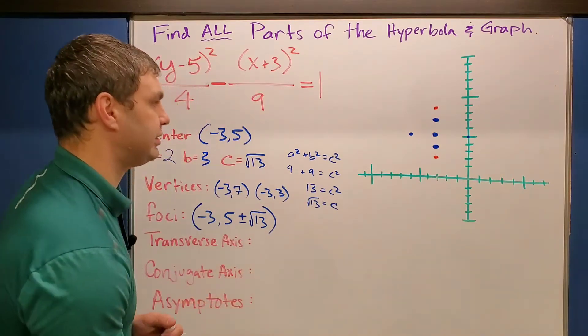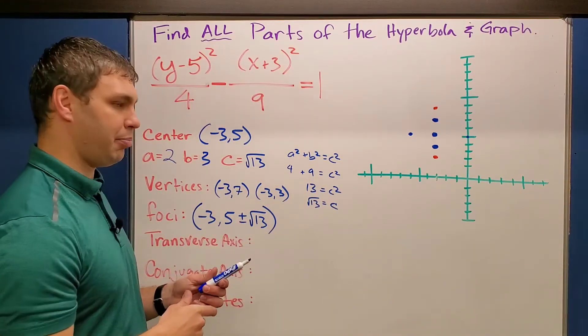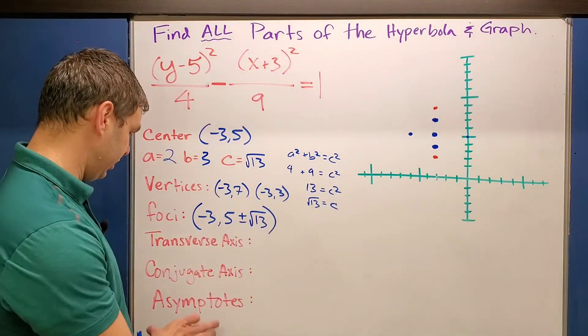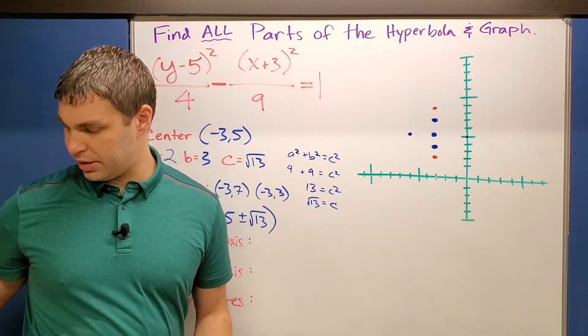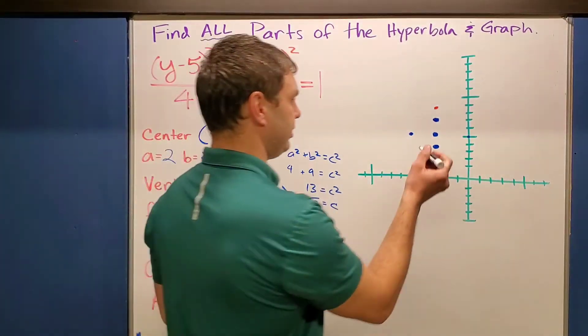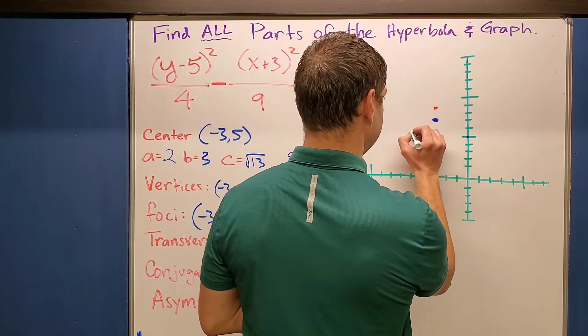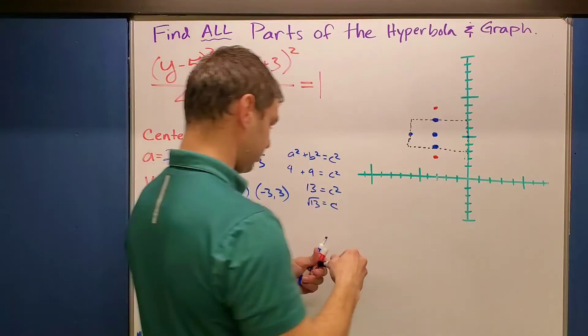What the b does is it helps me kind of create a box. It's going to be useful eventually for my asymptotes. So why don't I maybe just draw that box right now? And that's going to be, I'll use a dotted line here.